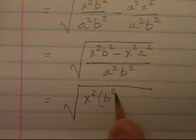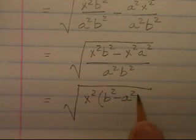I have a common factor of x squared in the top. I am going to factor that out. This will be the square root of x squared times the quantity b squared minus a squared, all over a squared b squared.